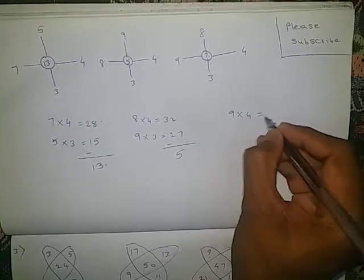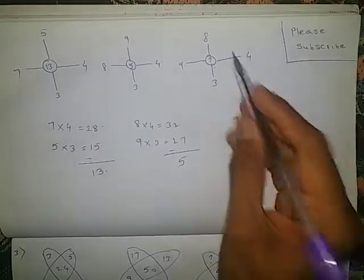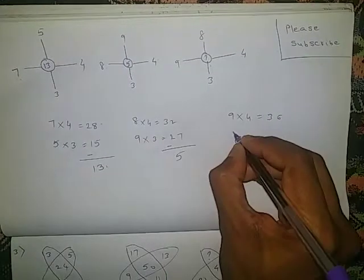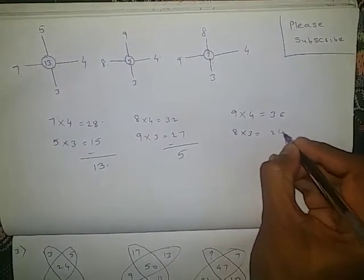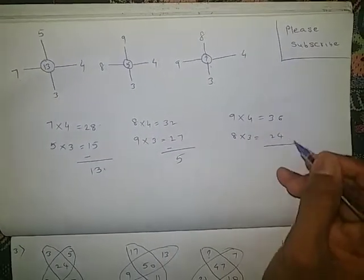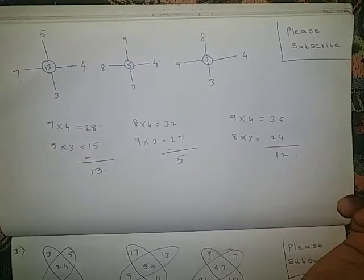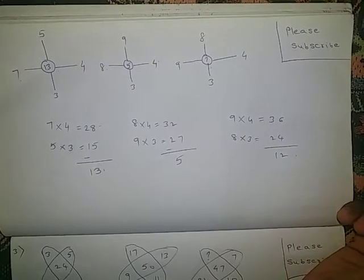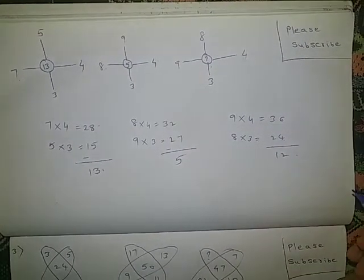The same logic here also: 9 fours are 36. 8 threes are 24. 36 minus 24 is 12. So the missing number is 12.